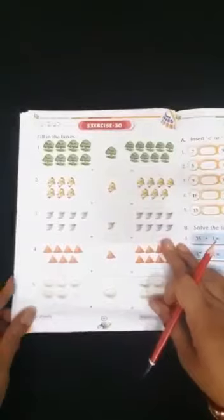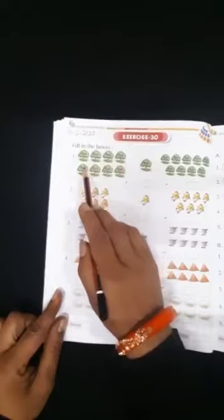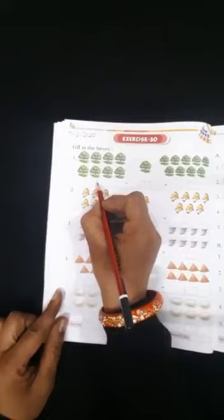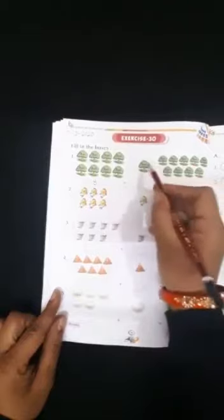Come to the next. Addition. Fill in the box. Now number 1, how many trees are here? 1, 2, 3, 4, 5, 6, 7, 8. So we will write here 8. Now this is addition sign. Add 1.